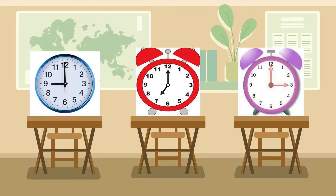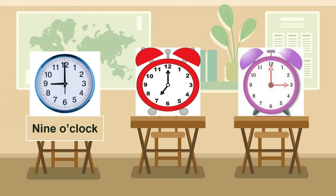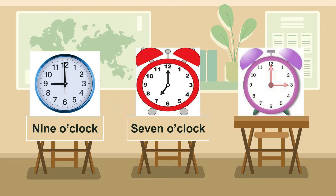Now pupils, let's read the time. Look at the blue clock — what is the time? Yes, it is 9 o'clock. Look at the red alarm clock — what is the time? Remember, the minute hand must be at 12 and you look at the short hand, the hour hand. Yes, it is 7 o'clock.